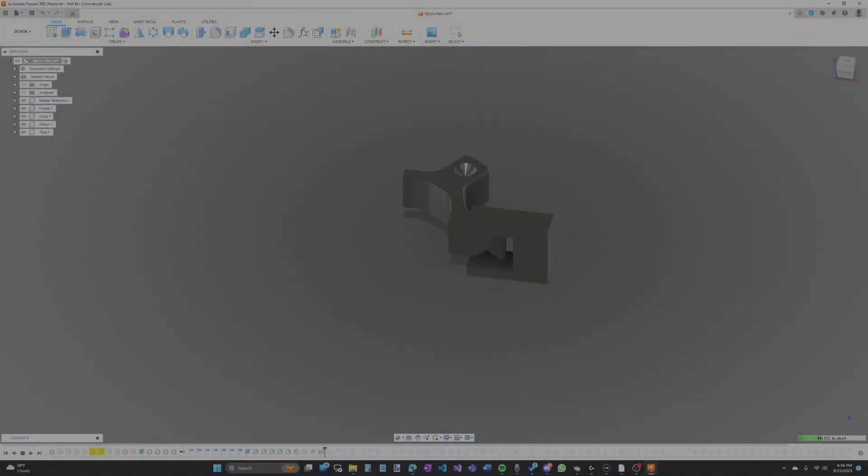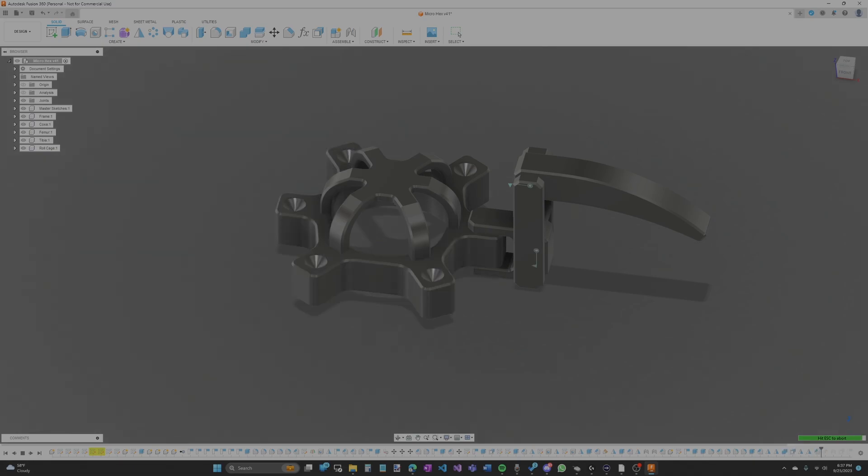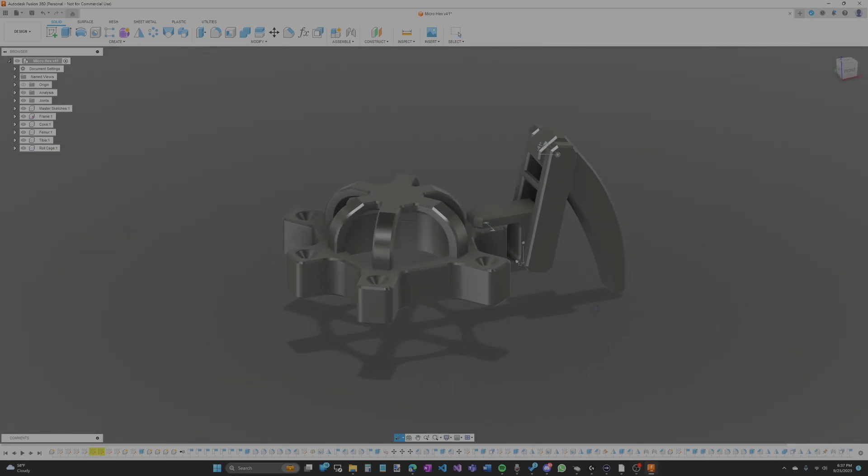First step was to make it in Fusion 360. Since this was going to be a scale model of the big hexapod, I decided to use its CAD file as a starting point. I duplicated it, deleted everything I didn't need, redrew a couple of parts, added the holes and pegs for snapping the pieces together, and I was done. That was a drastic simplification of what actually happened, but you get the idea.